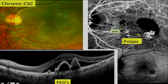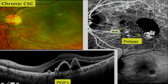This is another case of chronic CSC where on doing the ICG you pick up the lesion. The role of ICG is immense and FA plus ICG can be done together. ICG picks up the polyps clearly while FA doesn't. You can also see the branching vascular network on ICG.